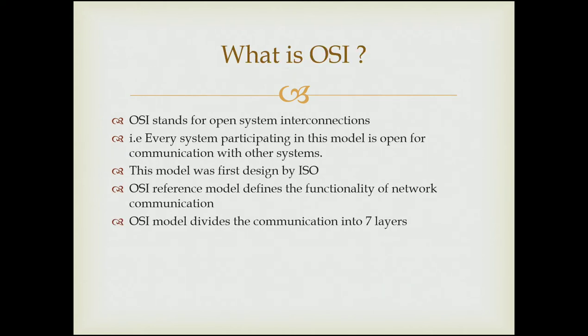OSI stands for Open System Interconnection — every system participating in this model is open for communication with other systems. It was introduced in the late 1970s by the International Standard Organization. The OSI model consists of seven separate but relatable layers, each of which defines a part of the process of moving information across the networks.